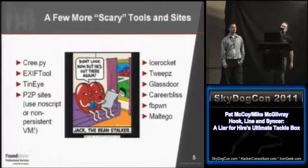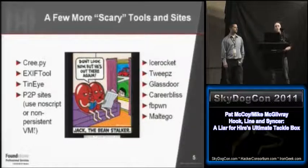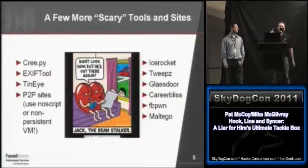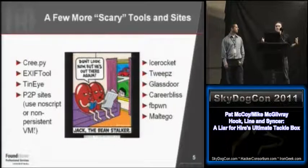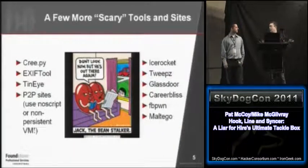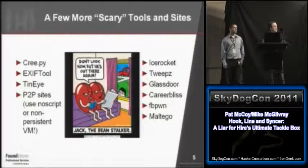FB Pwn is a set of scripts that's pretty interesting. Basically, you send someone a friend request using a bogus account — maybe with a picture of a supermodel set to private. They click Accept, realize they don't know the person, and try to delete them. What FB Pwn does is it polls Facebook every 30 seconds or so. As soon as you click Accept, the next time it polls, it sees you're a friend and leaches all the information off your page — all your Facebook history. This is great if you're targeting individuals who work for a specific company.